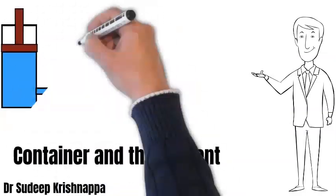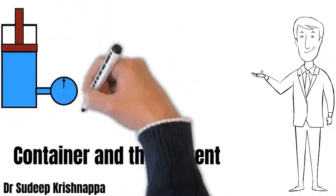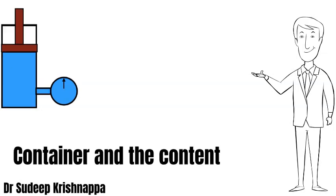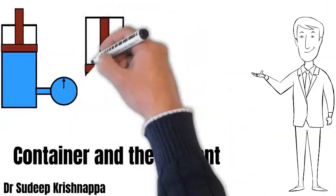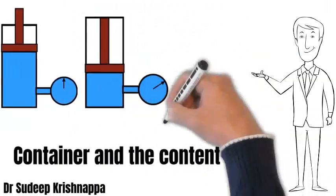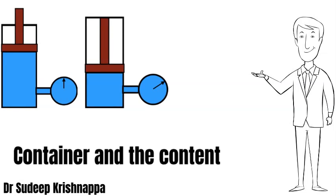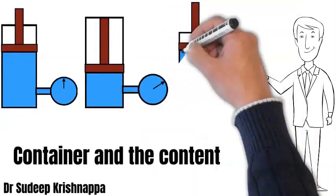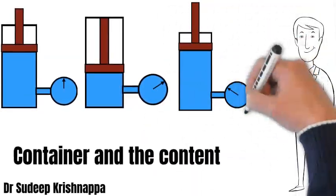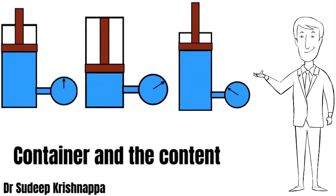In the first scenario, we have a container whose volume is about 5 liters filled with about 5 liters of content, giving a certain pressure. If we keep the content volume at 5 liters and reduce the container to 4 liters by pushing the plunger down, pressure increases. Similarly, if we increase the container to 6 liters by pulling the plunger up, the pressure drops.